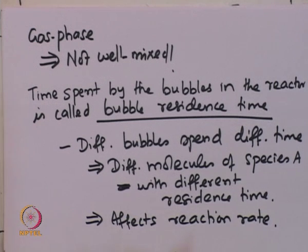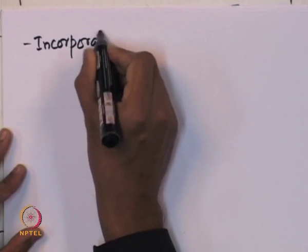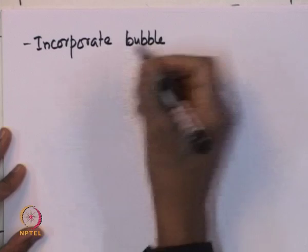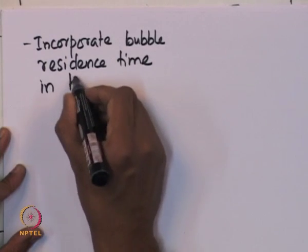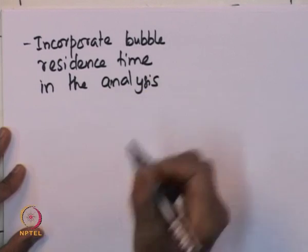It is important to note that RTD affects the conversion but does not affect the intrinsic reaction kinetics. The reaction rate is a function of available surface area, and available surface area depends on the time spent by the bubbles inside the reactor. Therefore, it is important to incorporate the bubble residence time into the analysis of such reactors.